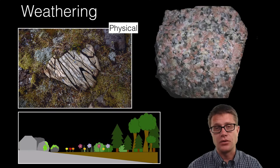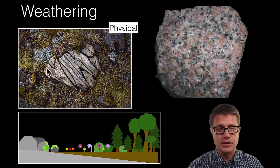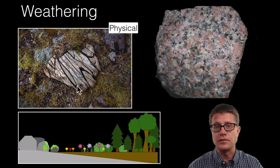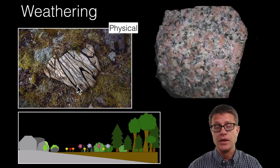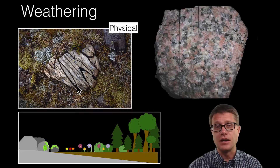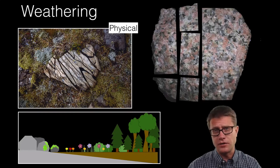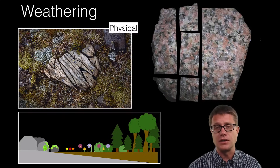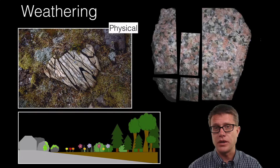The first type of weathering is going to be physical weathering. This is an example of a rock that has been weathered physically — you can see it is just broken apart. So that is water, it could be ice wedging, it could be the roots of a plant. But anything that increases the surface area of the rock — in other words anything that physically breaks it down into smaller bits — that is going to be physical weathering.